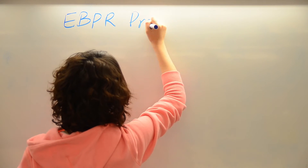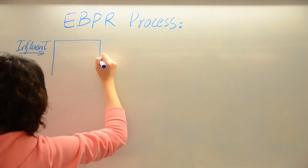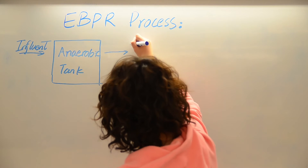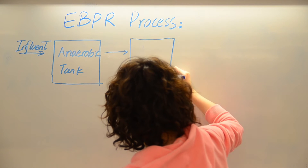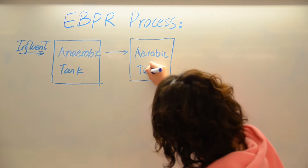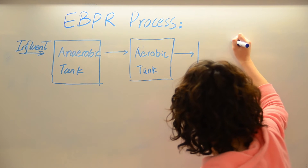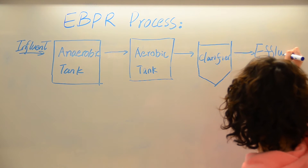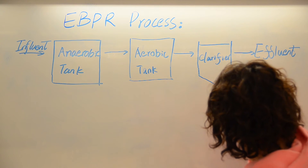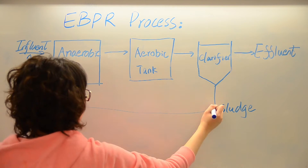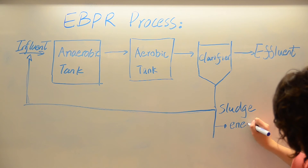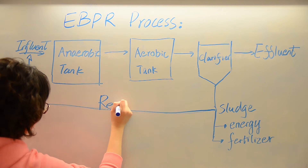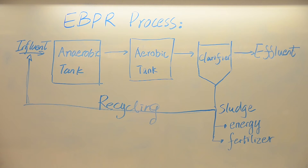There are two main phases in EBPR. First, the bacteria are held in an anaerobic tank, where they store energy and have a competitive advantage over other organisms. Then, the bacteria are transferred to an aerobic tank, where they grow rapidly, uptaking phosphorus. Everything then goes into a clarifier, where the sludge and water are separated. A bit of the activated sludge is recycled to inoculate the influent water, while the rest can be used for energy or as fertilizer. Much of the organic matter, minerals, nitrogen, and phosphorus are stored in the sludge, making for a fertilizer that is rich in nutrients and minerals.